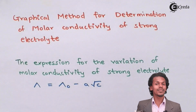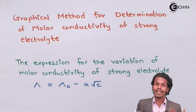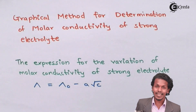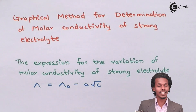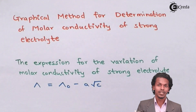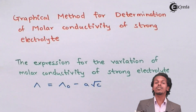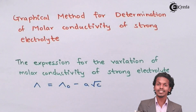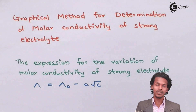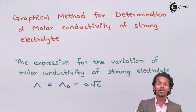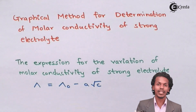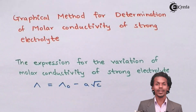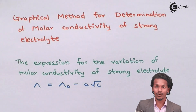When it comes to a weak electrolyte, molar conductivity also increases, but we cannot determine that by the graphical method. So when talking about a graphical method, let us look at the terms involved in estimating the maximum limiting value for a strong electrolyte.